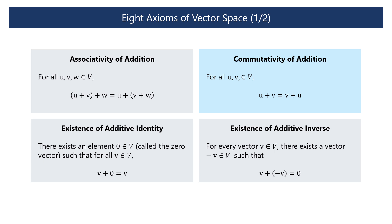Axiom 2 — Commutativity of addition: For any vectors u and v, the sum of u and v equals the sum of v and u. Axiom 3 — Existence of additive identity: There is an element 0 in the vector space V, called the zero vector, such that for any vector v in V, adding the zero vector to v results in v itself. Axiom 4 — Existence of additive inverse: For each vector v in the vector space V, there is a vector minus v such that when v is added to minus v, the result is the zero vector.